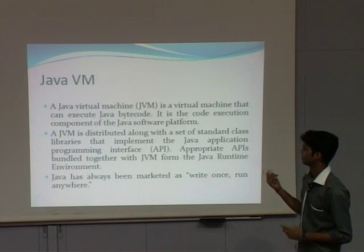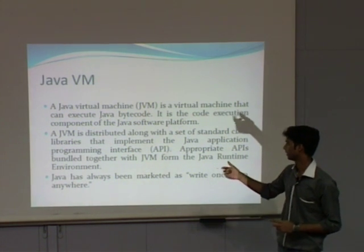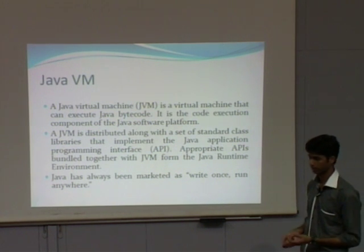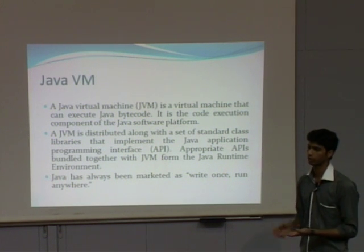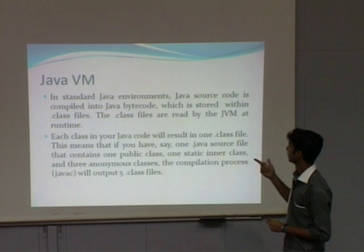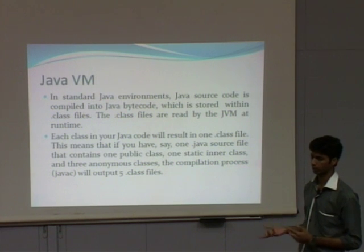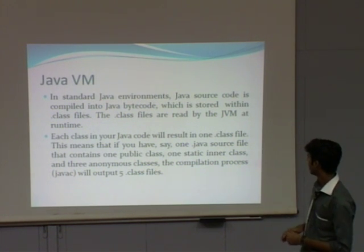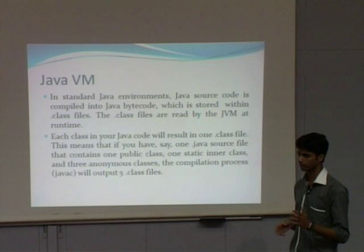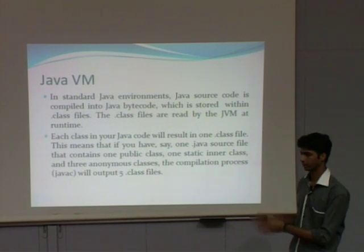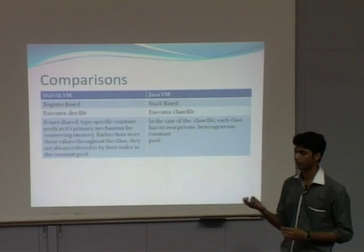Now, the Java virtual machine — as you know, this virtual machine can execute Java bytecode and has a standard class library that implements the basic Java APIs. It is always marketed as 'write once, run anywhere,' as it is a platform-independent language. In JVM, the source code is compiled into Java bytecode which is stored as a class file and can be used across different platforms. For example, if a Java program has five classes, once compiled, we get five .class files as output — a different class file for each class.